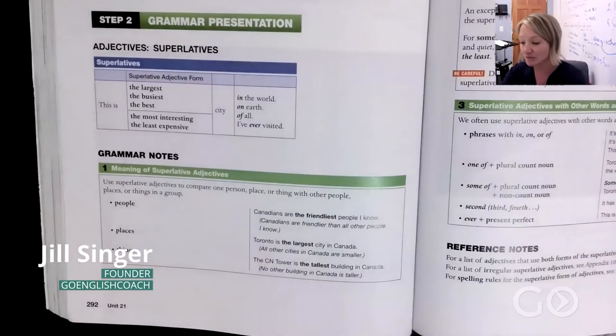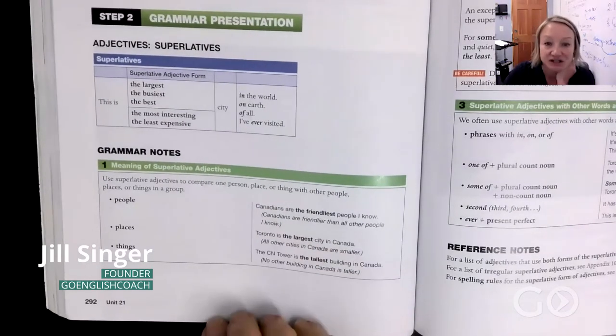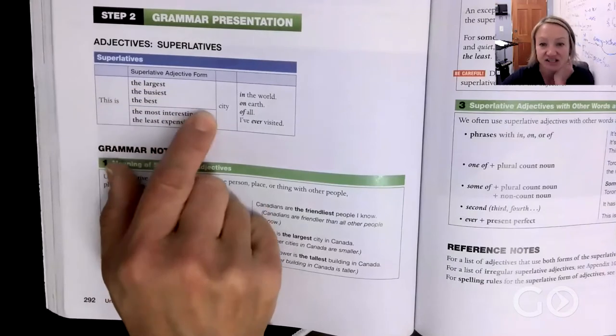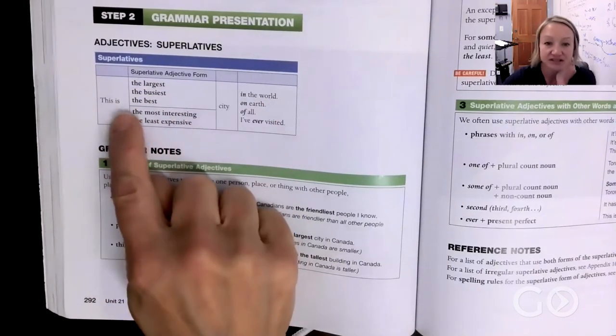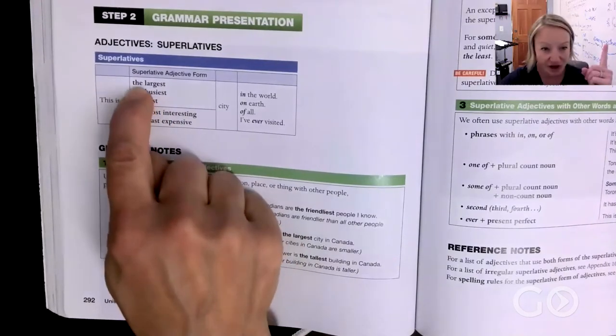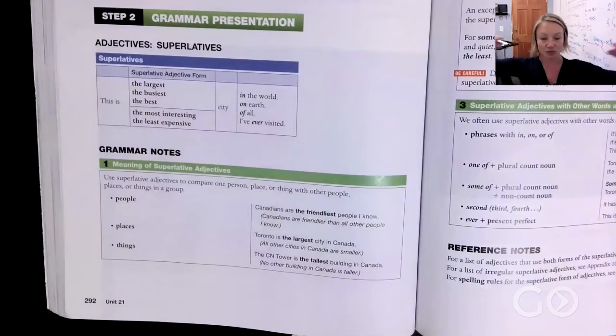We're going to start with superlatives. Here is the grammar presentation on how we use this. This is the largest city in the world, this is the busiest city. Notice that we have the 'the' - we didn't use that in the comparative form. This is when you're comparing one city with all of the cities in the world.